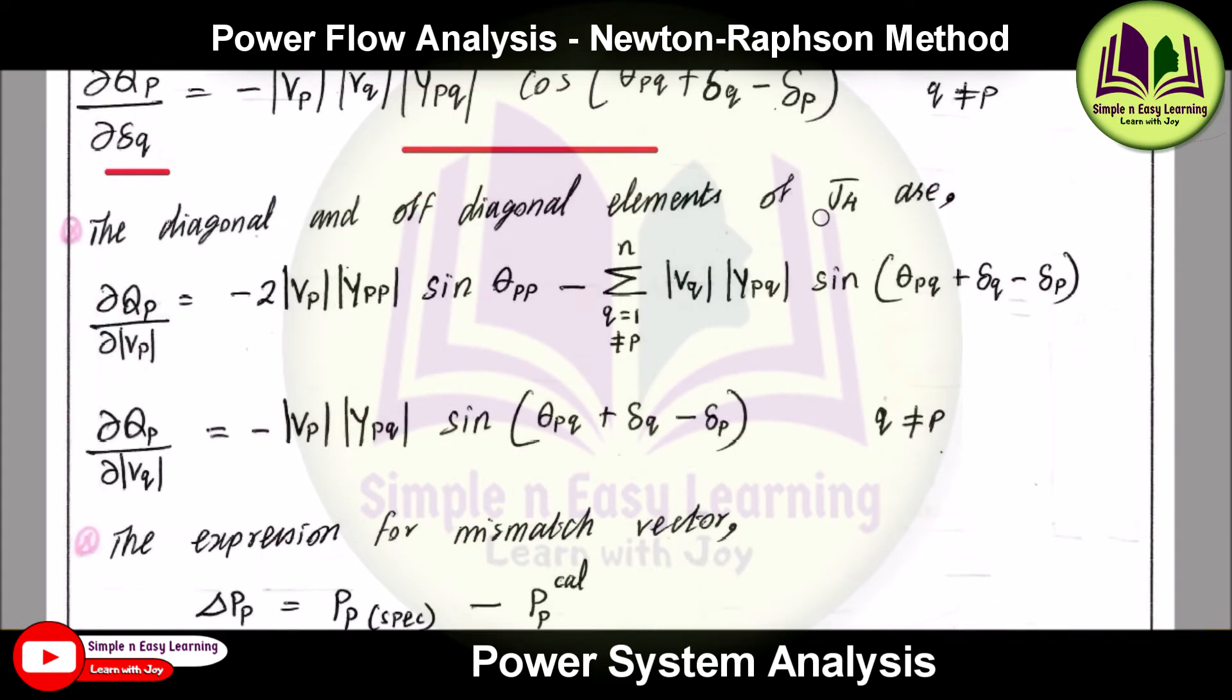And the fourth term J4: ∂Qp/∂Vp and ∂Qp/∂Vq. So these are the two formulas. You need to remember all these six formulas in order to form the Jacobian matrix. Thanks.